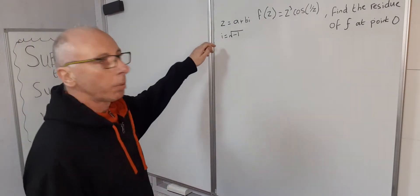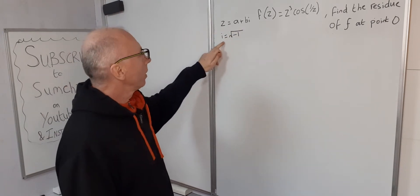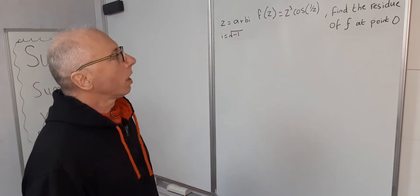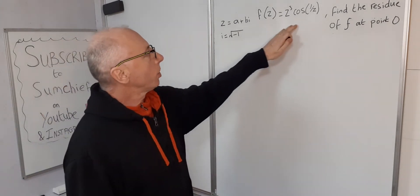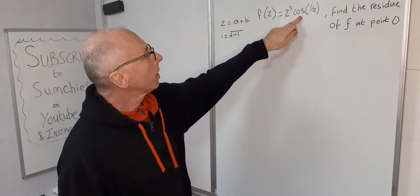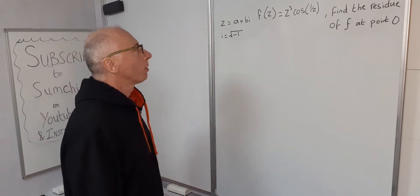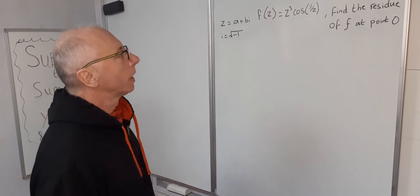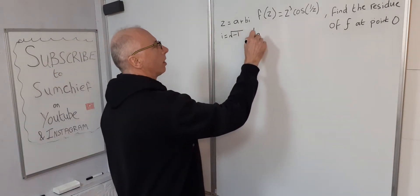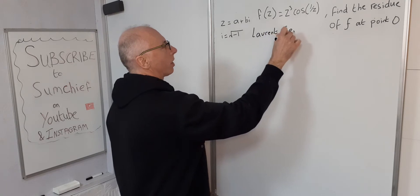As always in complex analysis, z equals a plus bi where i is the square root of minus 1. To find the residue, we'll look at the Laurent series, since we know the Taylor series for cosine and z cubed is already in polynomial form.